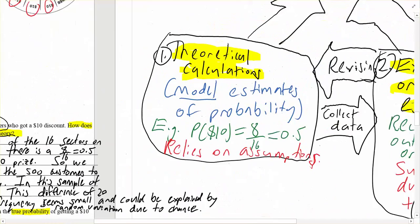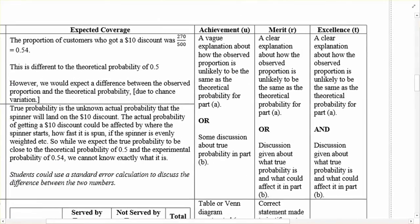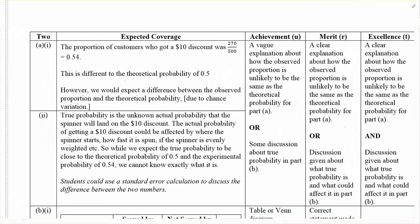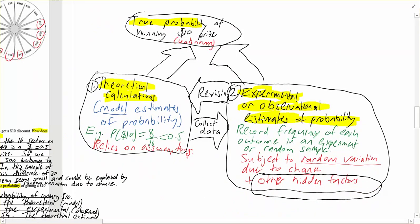Looking at how that question was marked: to get excellence, you needed a clear explanation of how the observed proportion — the experimental — is unlikely to be the same as the theoretical probability, and a discussion about what true probability is and what could affect it, such as the way the wheel is spun and maybe the weight distribution. So while we expect the true probability to be close to the theoretical probability of 0.5 and the experimental probability of 0.54, we cannot know exactly what it is. It's worth practising some of these — your teacher will give you more to do. Just keep that flow diagram clear in your mind — this whole process of estimating true probability.